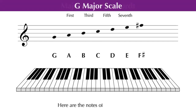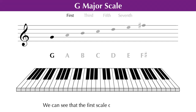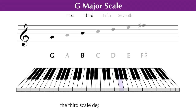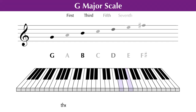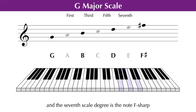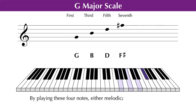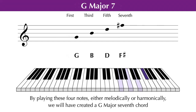Here are the notes of a G major scale. We can see that the first scale degree is the note G, the third scale degree is the note B, the fifth scale degree is the note D, and the seventh scale degree is the note F sharp. By playing these four notes either melodically or harmonically, we will have created a G major seventh chord.